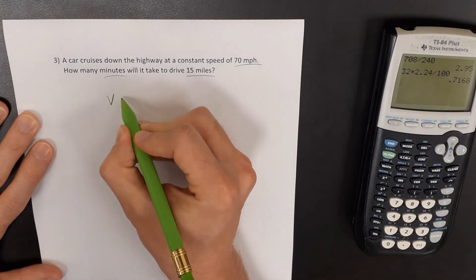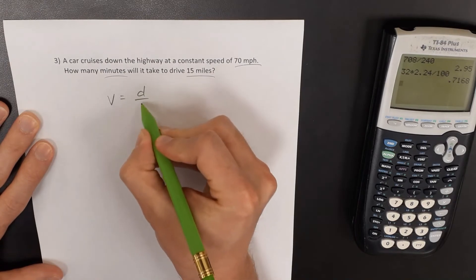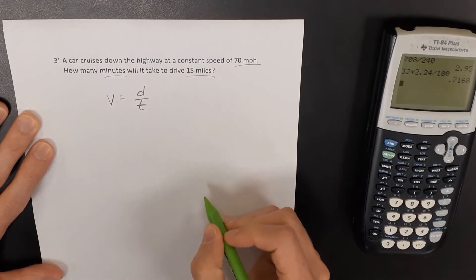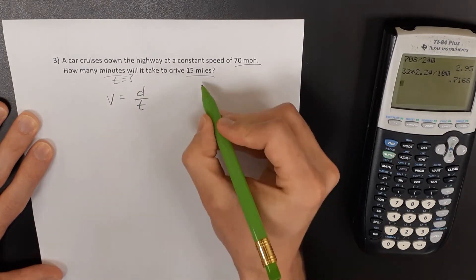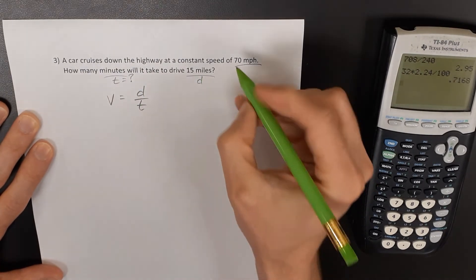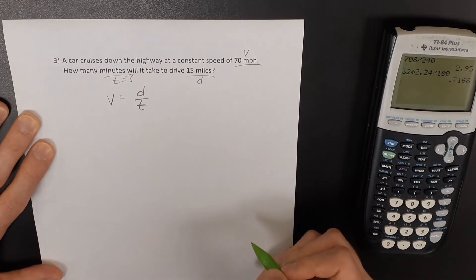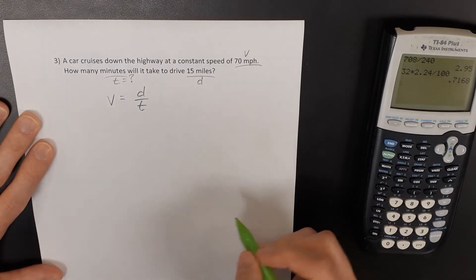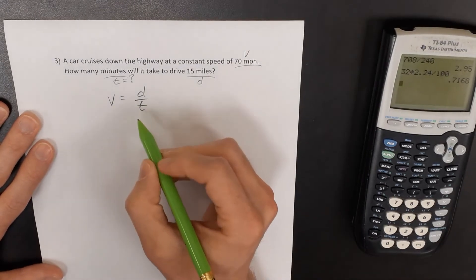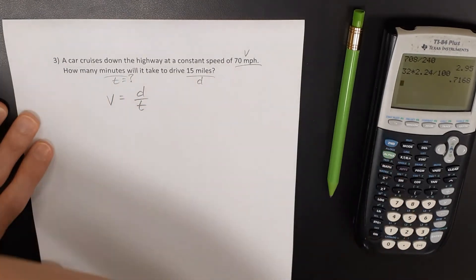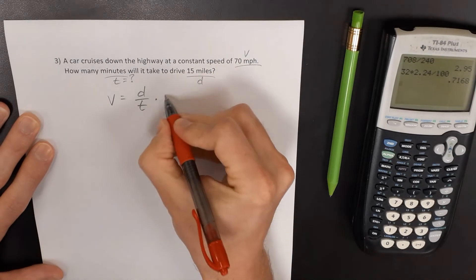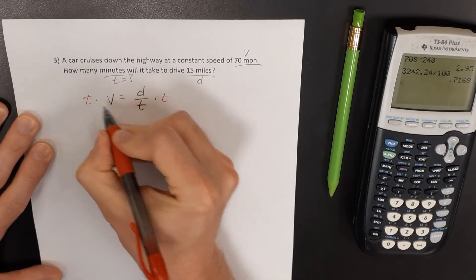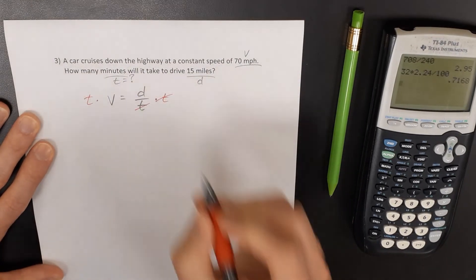All right, so think back a minute ago we said that speed was distance divided by time. We're trying to solve for the time. We know the distance is 15 miles and the speed is 70 miles per hour. So if I want to solve for time, then I'm going to multiply both sides of this equation by time so that it's going to cancel out here.